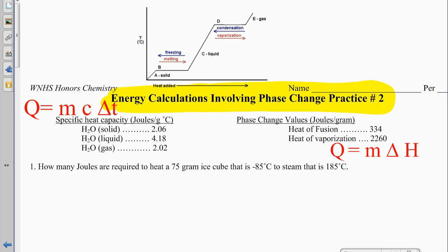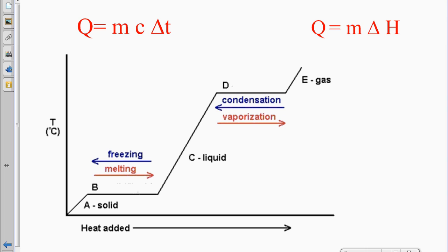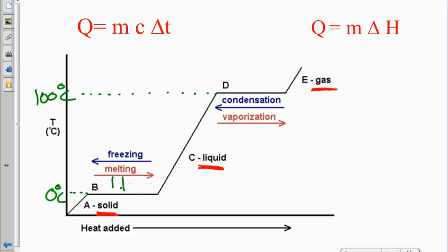I just wanted to go over a few things quickly to make sure we're all on the same page. Remember that when you are in a state — solid, liquid, or gas — two important temperatures for water are 0 degrees Celsius and 100 degrees Celsius. That's because that is where we have our phase change: freezing and melting at 0, and condensing and vaporization at 100, depending on whether you're adding energy or not.